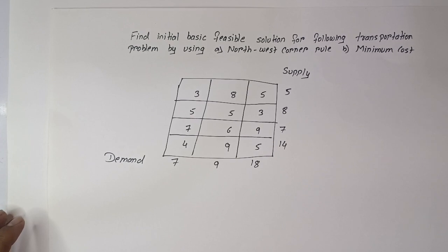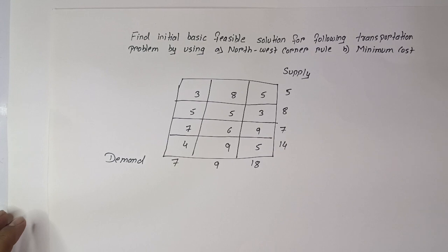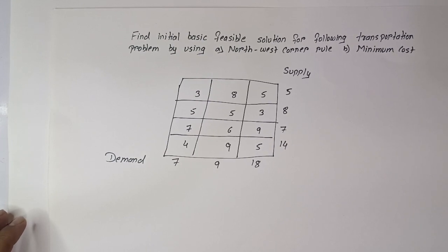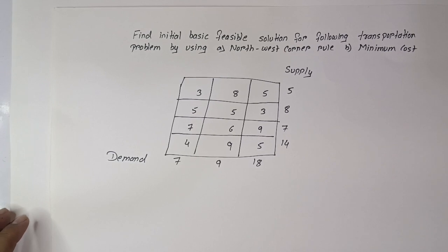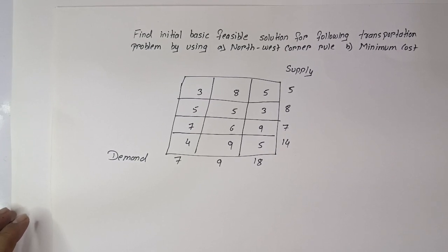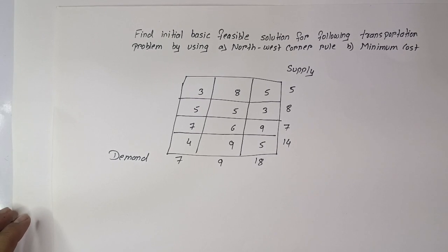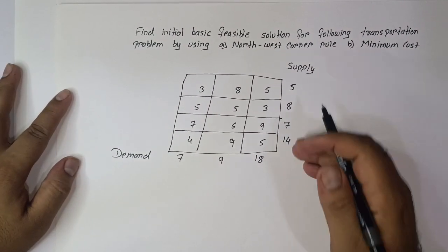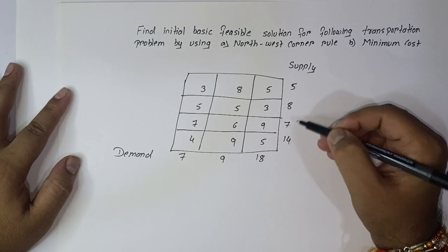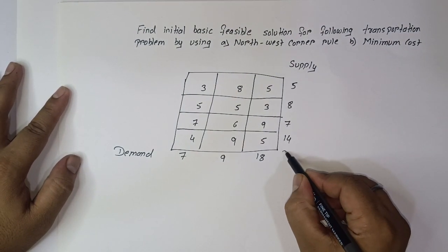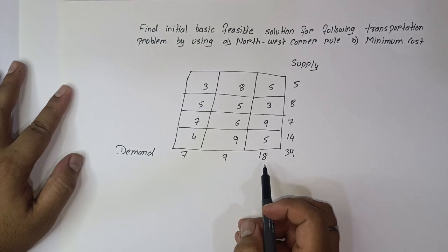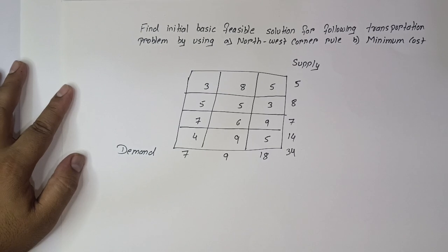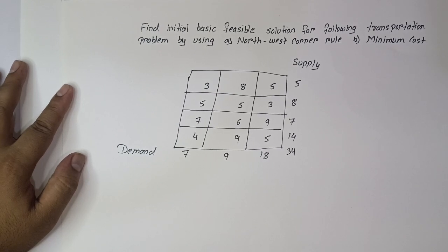Hello everyone. In this video we are going to solve a transportation problem using the North West Corner Rule and Minimum Cost Method. But before solving, we have to first check whether the problem is balanced or unbalanced. A transportation problem is balanced if total supply equals total demand. Here, supply is 5 + 8 + 13 + 20 = 34, and demand is 7 + 9 + 16 + 18 = 34. Since both are equal, the problem is balanced.